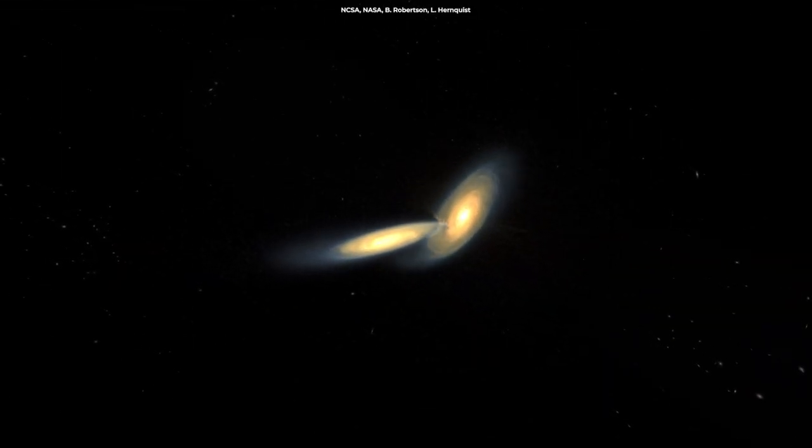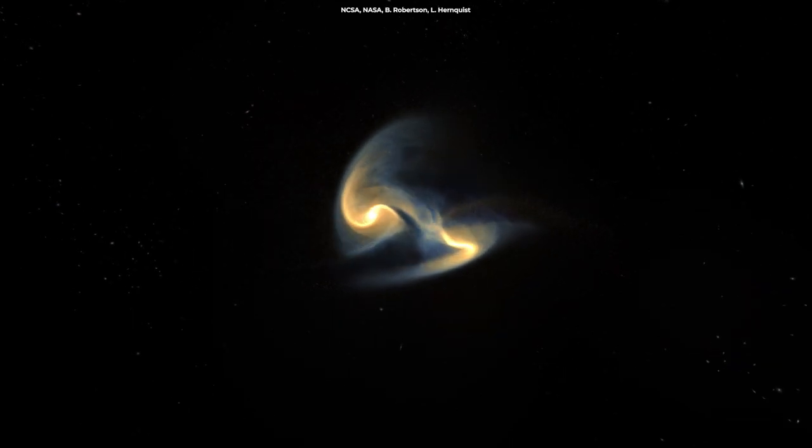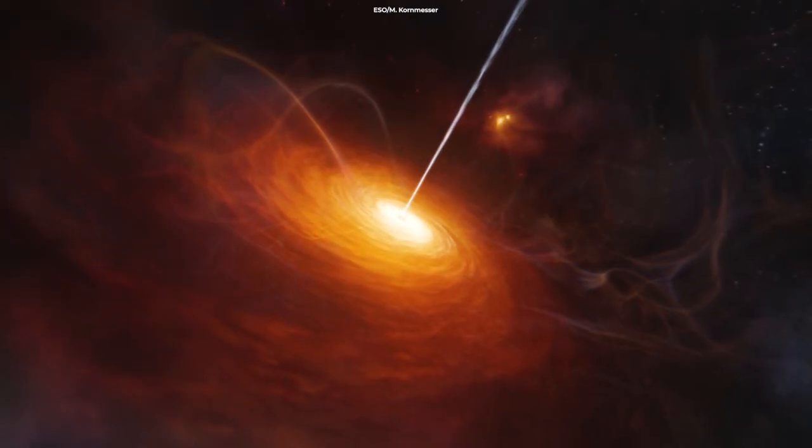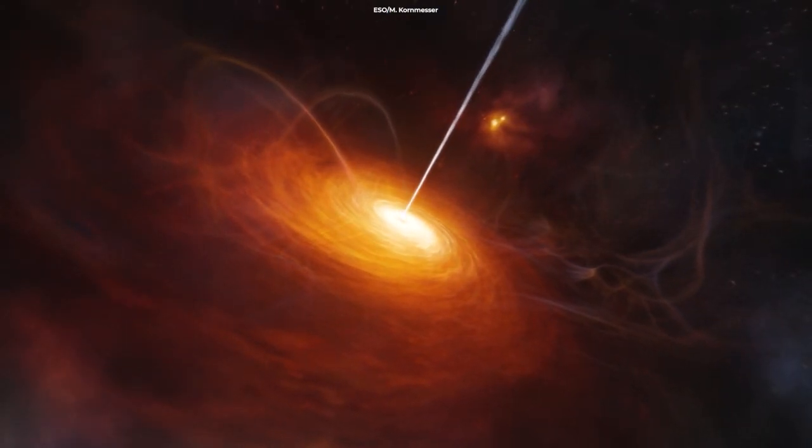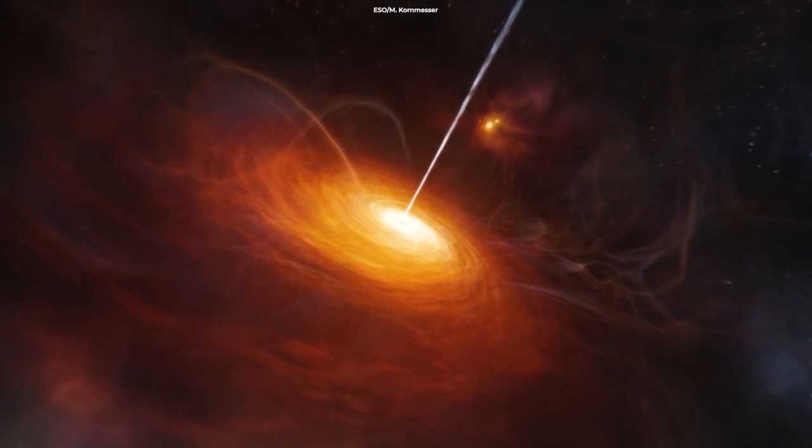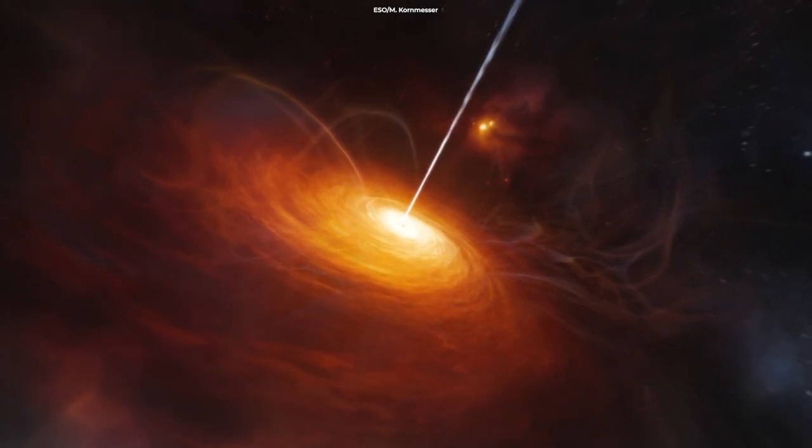Now, Webb has just peered at a group of galaxies merging together and swirling around an odd red quasar that existed 11.5 billion years ago. Its red color makes it very special.